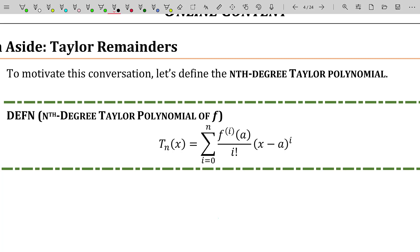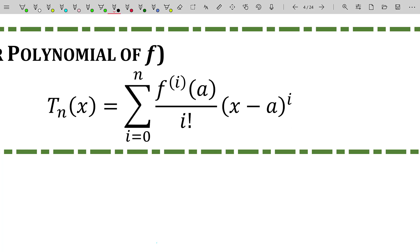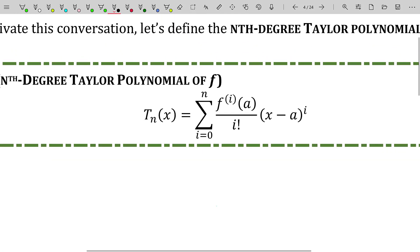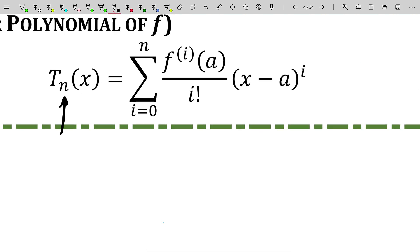Let's talk about Taylor remainders first, because this is going to be important. The idea of the nth Taylor polynomial is going to be incredibly important if you go into numerics, numerical analysis, numerical mathematics, or applied mathematics. So knowing what an nth degree Taylor polynomial is will be very important. What is the nth degree Taylor polynomial? It is the nth degree polynomial that you get when you expand the Taylor series for a function, but you only go out to the nth degree.